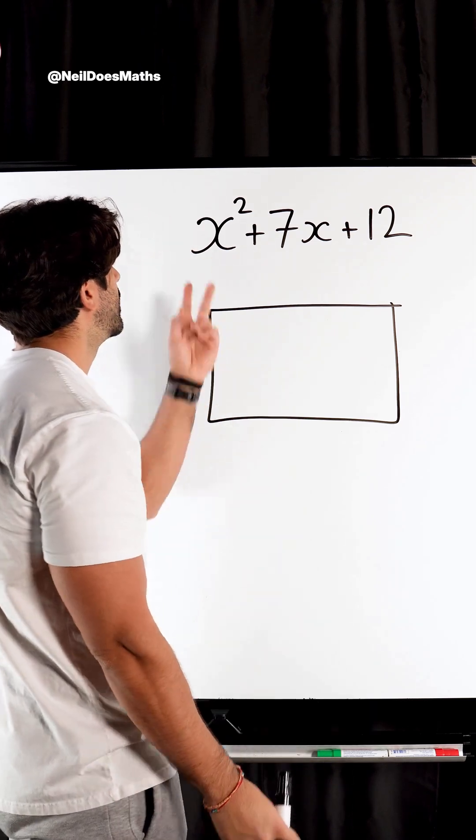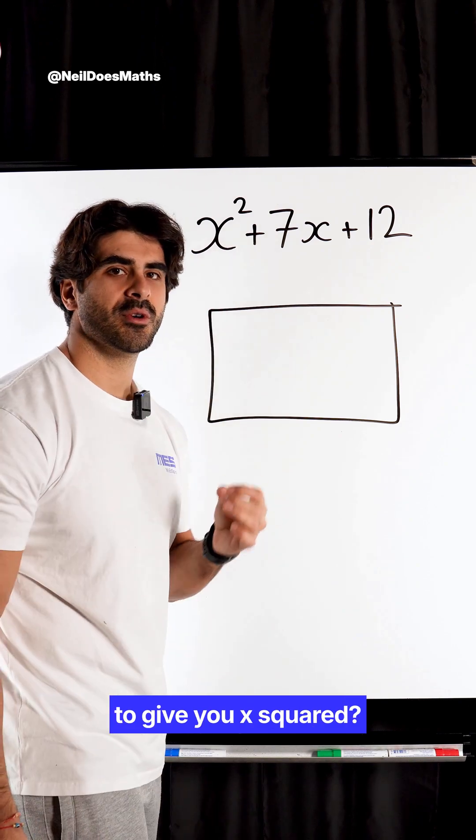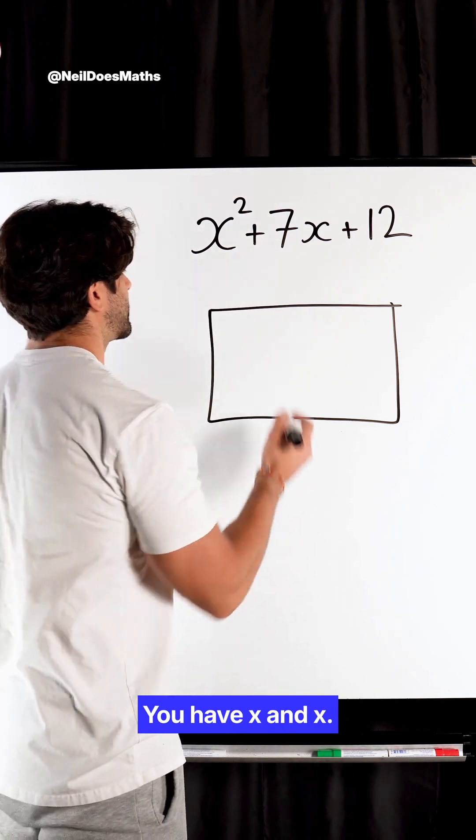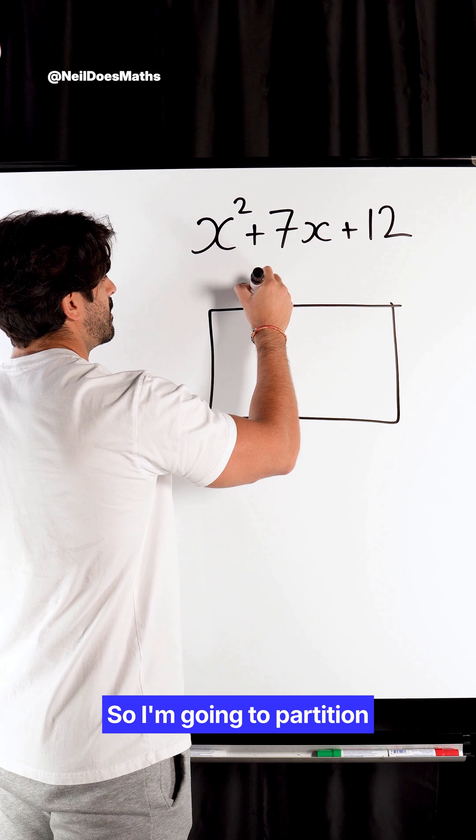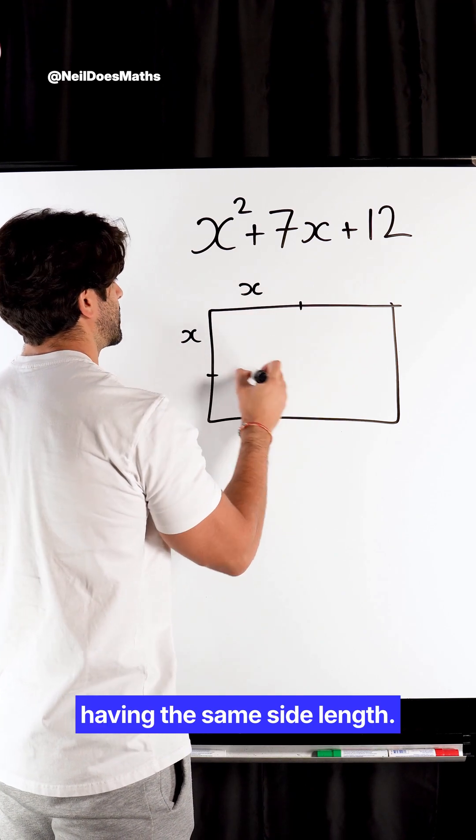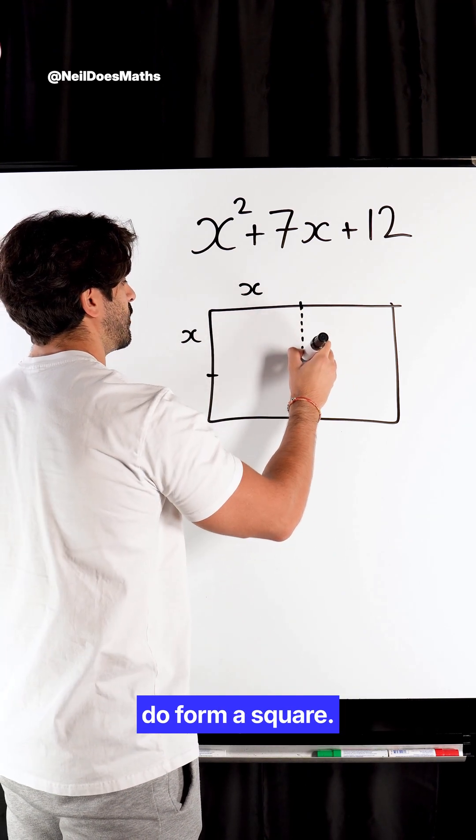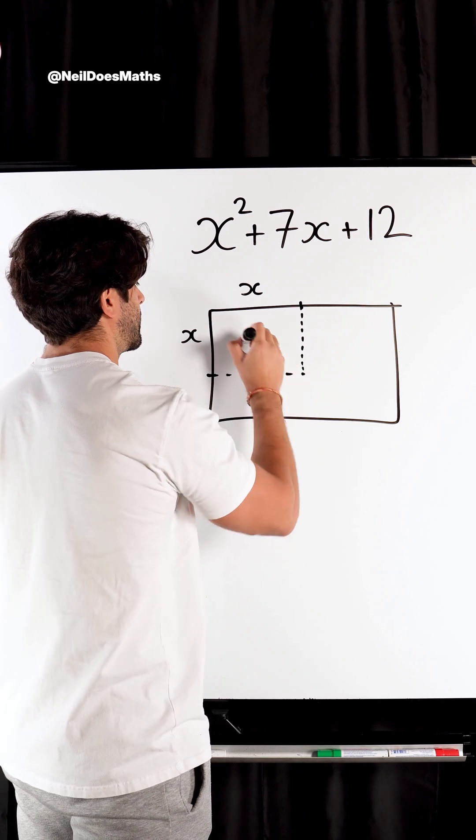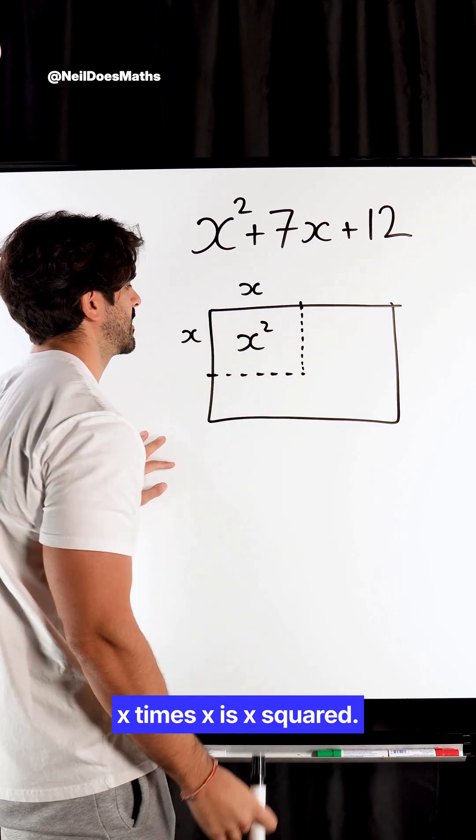And what we're saying is, what multiplies to give you x squared? You have x and x. So I'm going to partition part of this rectangle, x and x, with both of them having the same side length. So here we actually do form a square. There you go. x times x is x squared.